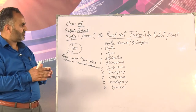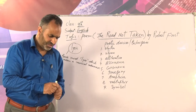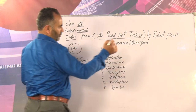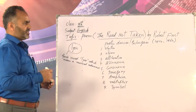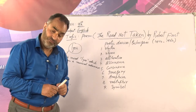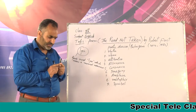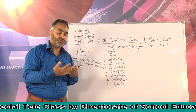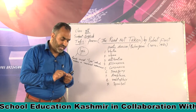Before I go to the text, let us know something about Robert Frost first. It is from your book — you can read it on page 64. Robert Lee Frost was born in 1874 and he died in 1963. So he was a 20th century American poet. He was born in San Francisco, California. Frost attended high school in Lawrence, Massachusetts, and began writing poetry.